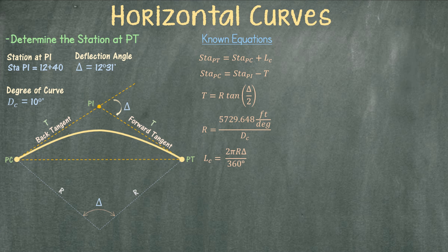The length of the curve is determined by multiplying the radius, the deflection angle, and 2π, all divided by 360 degrees. I will start to calculate the radius. After plugging in the degree of curve into the equation, we get 572.96 feet.